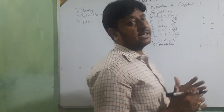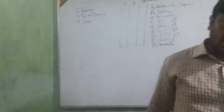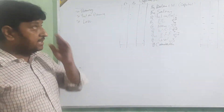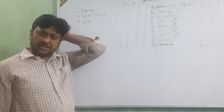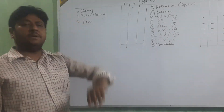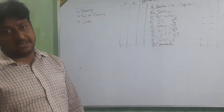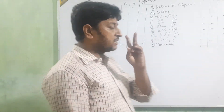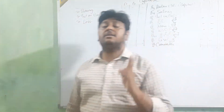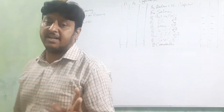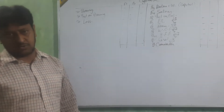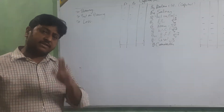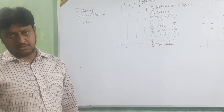Now coming to the second part: if the capital is fixed. If the capital is fixed, then we are going to make two accounts. One is the capital account and the second is the current account.